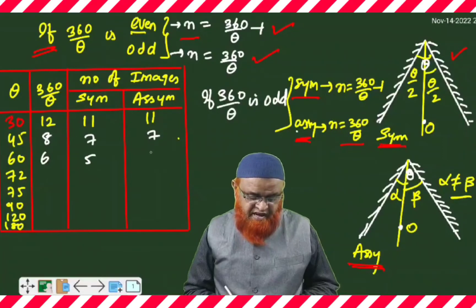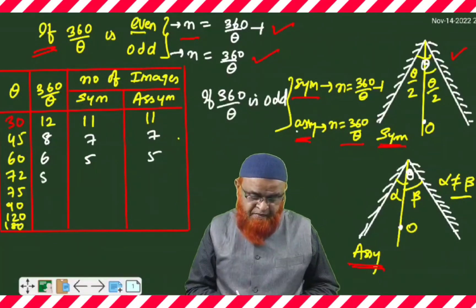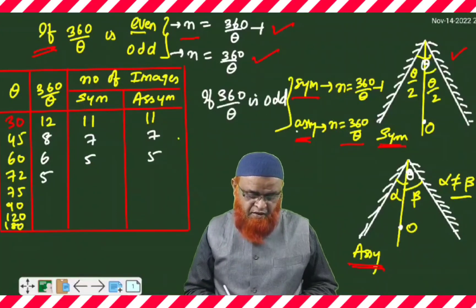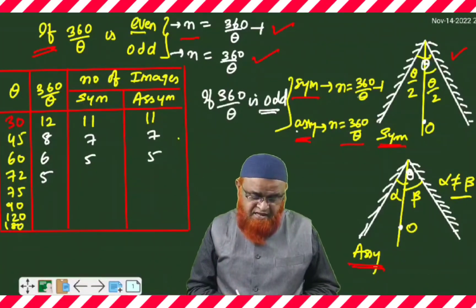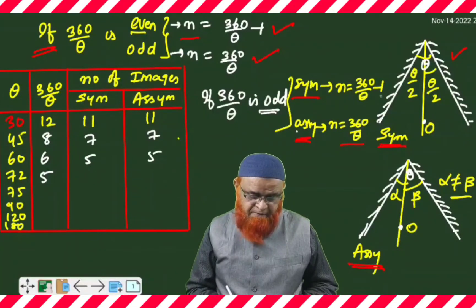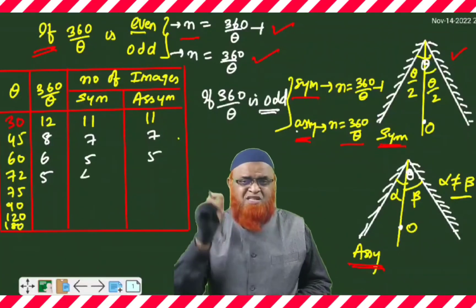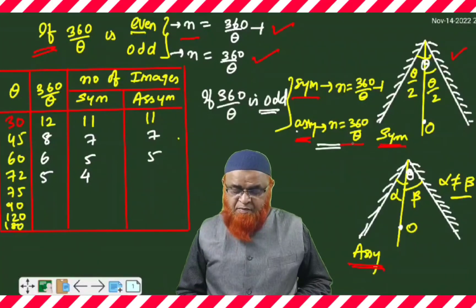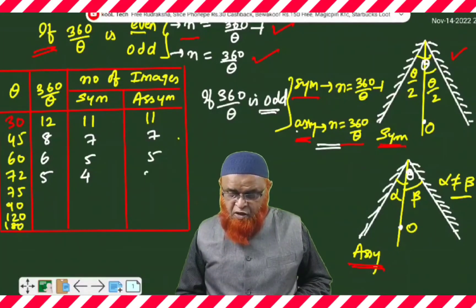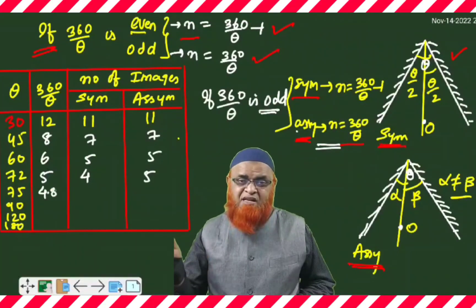For 72 degrees, 360 divided by 72 gives 5, which is the first odd case. Since it is odd, sub-conditions apply. If it is the symmetry case, the answer is (360/θ) − 1 = 4. If it is the asymmetry case, the answer is 360/θ as it is, so we keep it as 5.